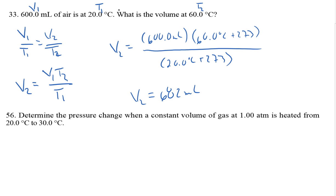Problem three reads: determine the pressure change when a constant volume of gas at one atmosphere is heated from 20 Celsius to 30 Celsius. I'm told that volume is constant. I'm given an initial pressure, an initial temperature, and a final temperature.